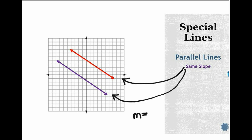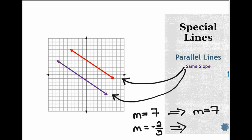So if I have a line with a slope of seven, then a line that's parallel to it will have a slope of seven as well — nothing will change. If I have a line with a slope of negative two over three, then a line parallel to it will have the exact same slope: negative two over three. Same slope.